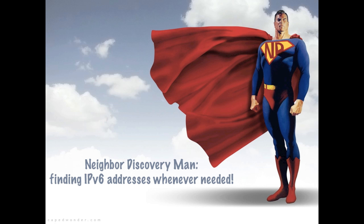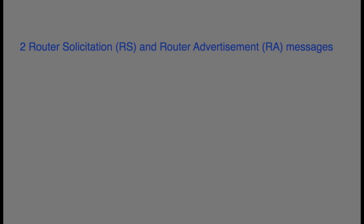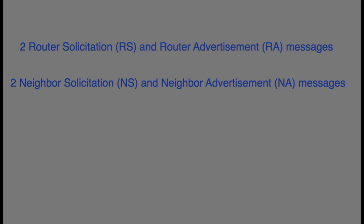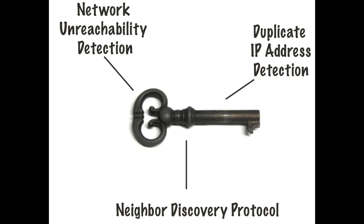ND is the hero of addressing in IPv6 because it provides address resolution and address auto configuration. It does this by way of 5 different ICMP packets: a pair of router solicitation and router advertisement messages, a pair of neighbor solicitation and neighbor advertisement messages, and a redirect message, all sent via multicast ICMPv6. Neighbor Discovery, just like NUD and DAD, is key to the correct operation of an IPv6 network.